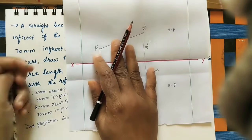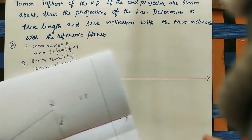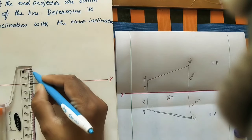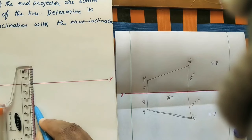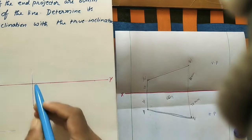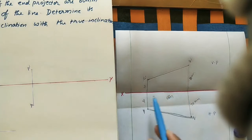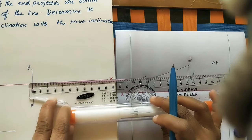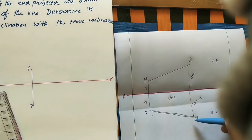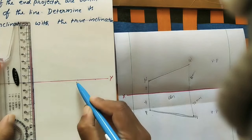Take the XY line of any length. Mark the P and Q positions accordingly. Mark P-dash at 20 mm above XY and small p at 30 mm below XY. Then, 6 centimeters from the first projector line, draw the second projector and mark Q-dash at 8 centimeters above the XY line and small q at 7 centimeters below. Join Q-dash and Q with the projector line, then join P-dash to Q-dash and small p to small q — giving the final front view and final top view.